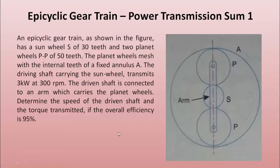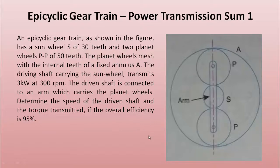In any gear train, there is always a driving shaft and a driven shaft. As the RPM changes, the torque on these shafts will also change. There is input power given by the driving shaft and there will be an output power coming out of the driven shaft. So we have to calculate how much power is coming out from the output shaft.